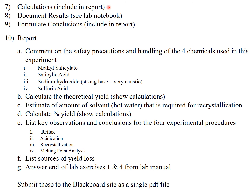Calculations will be included in your lab report; document results will be in your lab notebook; and conclusions will be in your lab report. The lab report should comment on safety precautions for the four chemicals used, calculate the theoretical yield with shown calculations, estimate the amount of hot water required for recrystallization, calculate the percent yield, list key observations and conclusions for the four experimental procedures — reflux, acidification, recrystallization, and melting point analysis — list sources of yield loss, and complete end-of-lab exercises one and four from the lab manual. When done, submit as a single PDF file to the Blackboard site.